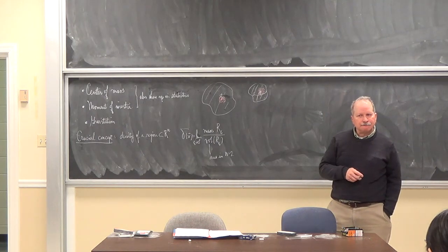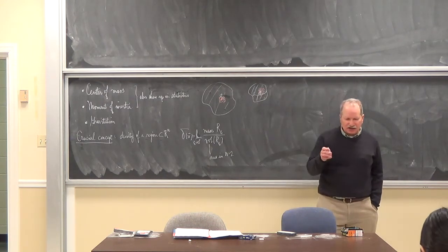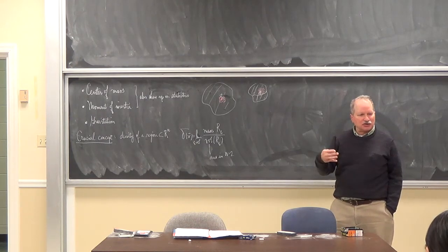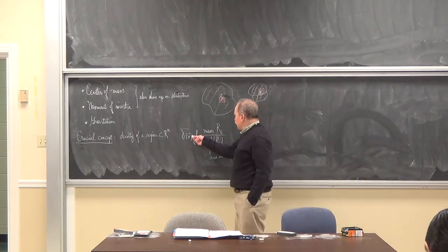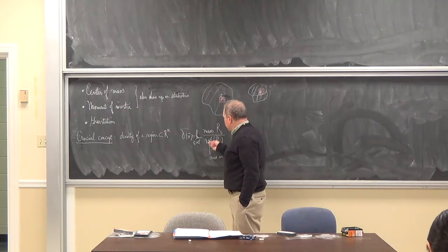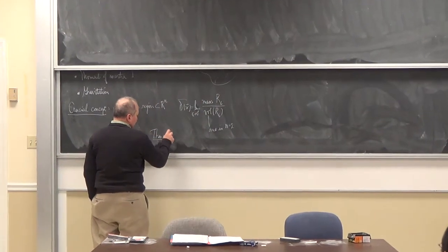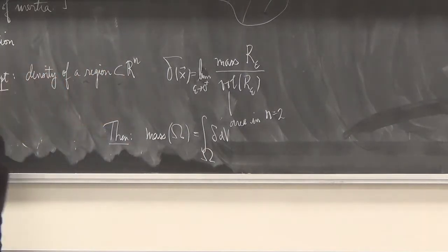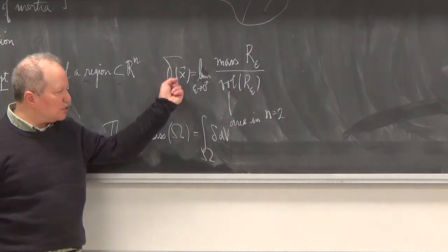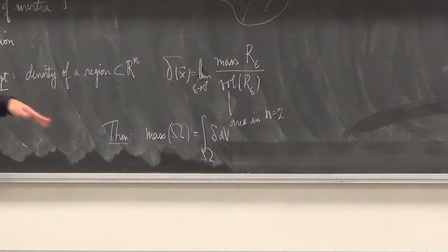What was going on in number 1 on the WebWork is it was an improper integral, because the function's blowing up as you go to zero, and we've only defined integrals of bounded functions. So you want to think about taking this limit idea, and then you can prove — and this is actually discussed in the book — that you get the mass back by integrating the density function. It sort of has the fundamental theorem of calculus feel to it.